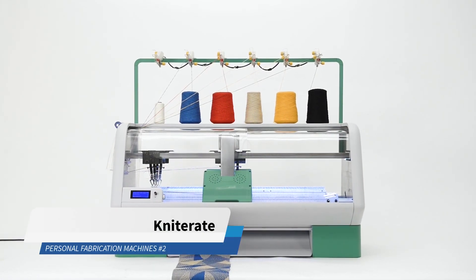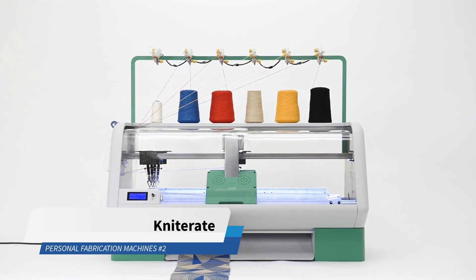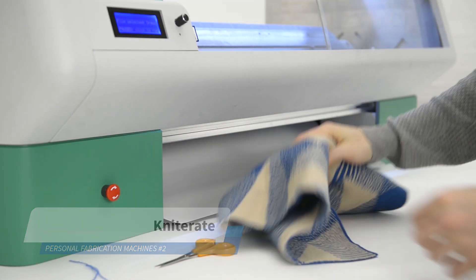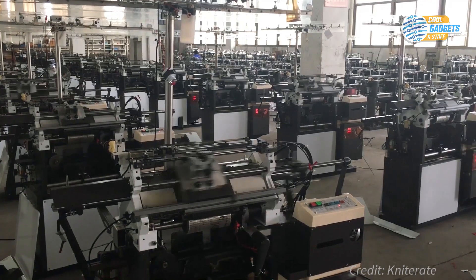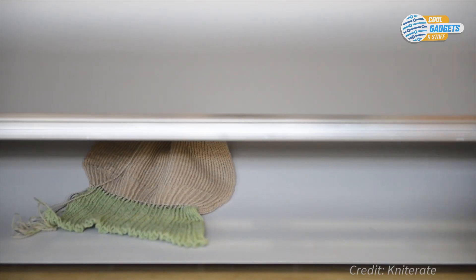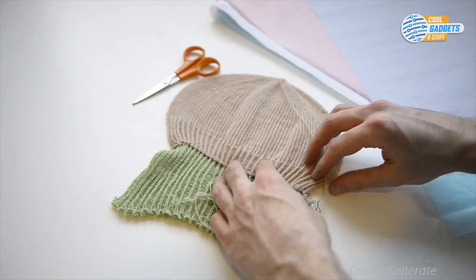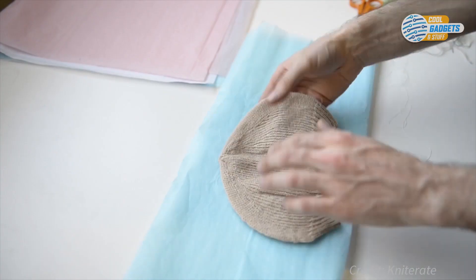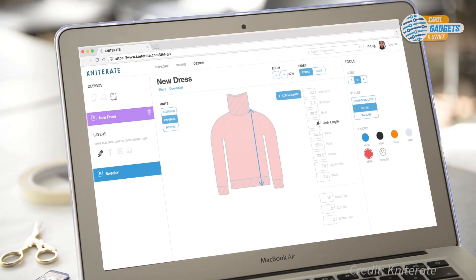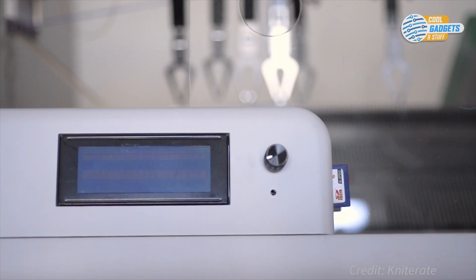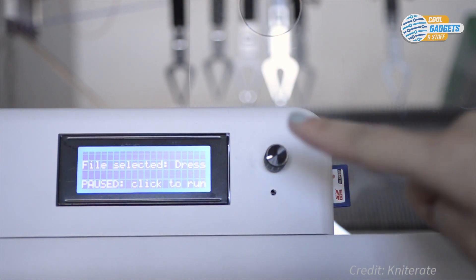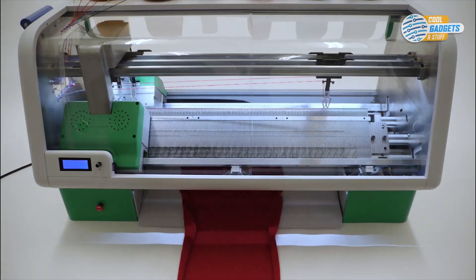Knitter8 is a desktop digital knitting machine that brings fashion fabrication into your workshop. Intended as a low cost and compact alternative to industrial knitting machines, Knitter8 allows you to create custom knitted garments like scarves, beanies, sweaters, and dresses all from a digital design with only the touch of a button. So you can explore garment making and locally make personalized goods for your customers, your friends and family, or yourself.